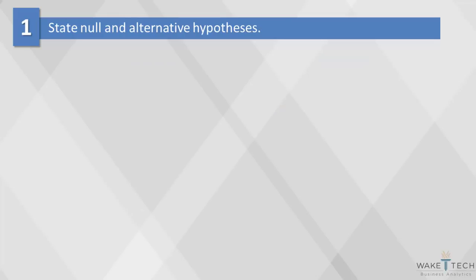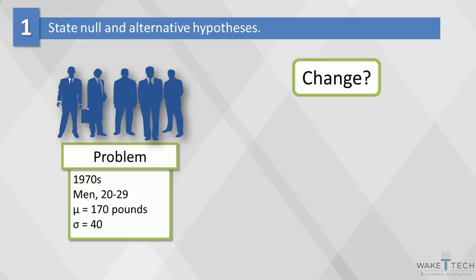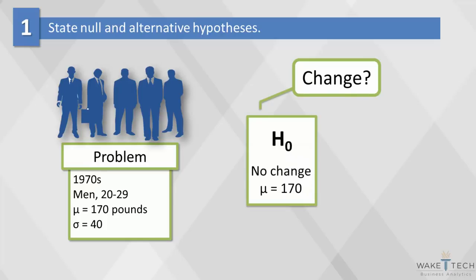Here's an example of setting up the null and alternative hypotheses. In the late 1970s, the weight of US men between 20 and 29 years of age had a log normal distribution with a mean of 170 pounds and a standard deviation of 40 pounds. We ask if body weight in this group has changed since 1970. Under the null hypothesis, there is no difference in the mean body weight between then and now, in which case mu would still equal 170 pounds.